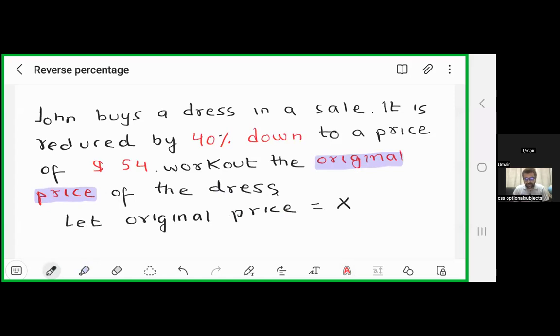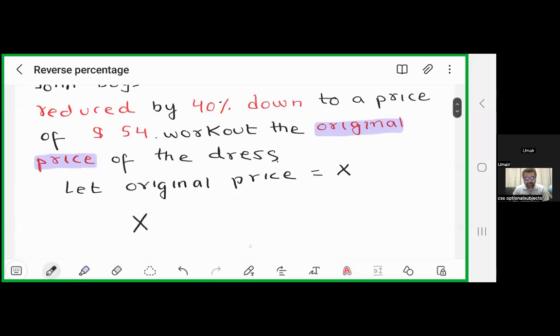And as the question says that original price is reduced by 40 percent, here it is written the original price of the dress was reduced by 40 percent, so we have to reduce this price which is x by 40 percent.